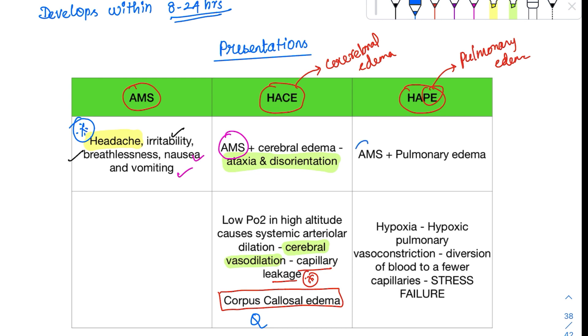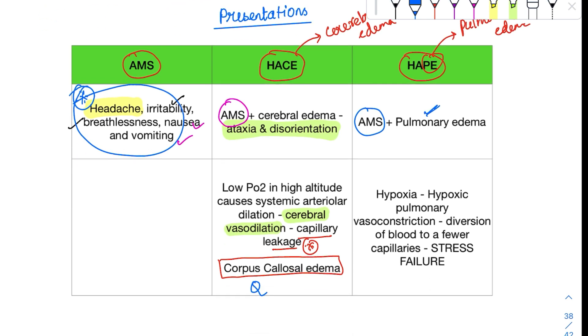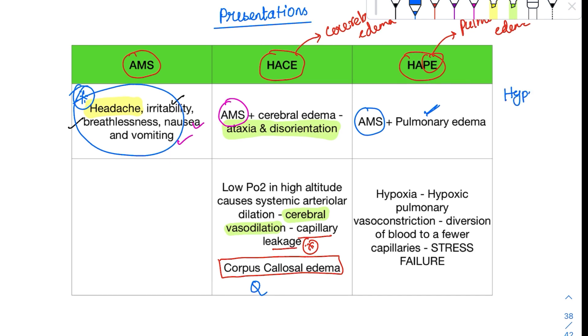HAPE has all AMS symptoms followed by pulmonary edema. But in pulmonary edema, there's no vasodilation. Hypoxia everywhere in systemic circulation causes vasodilation, but the pulmonary system causes vasoconstriction - hypoxia induced pulmonary vasoconstriction. This constricts lung vessels. Blood diverts to other vessels, creating severe stress for the heart to pump. This stress causes endothelial failure, leading to stress failure and edema in the lungs.